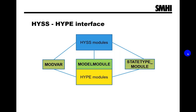Three Fortran modules provide the primary interface between HYS and the model. They are the modules Modvar, ModelModule, and StateTypeModule.